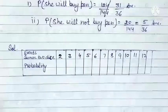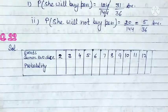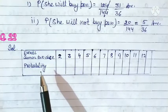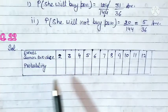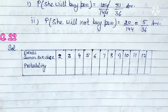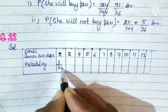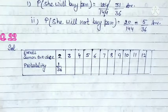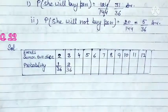Two dice are thrown, and we need to find the probability of each sum. Sum = 2 occurs only when both dice show 1 (i.e., 1,1) — just one case — so probability = 1/36, because when two dice are thrown, total possible outcomes = 36. Sum = 3 occurs when first die shows 1 and second shows 2, or first shows 2 and second shows 1 — two cases — so probability = 2/36.